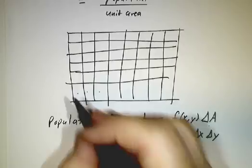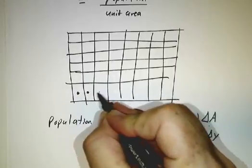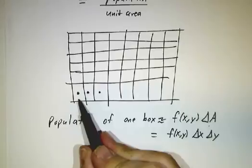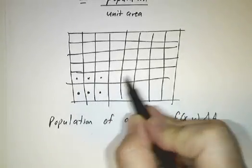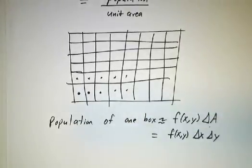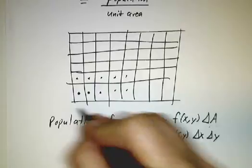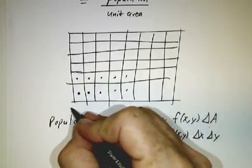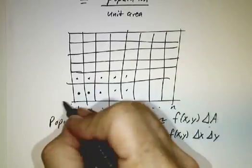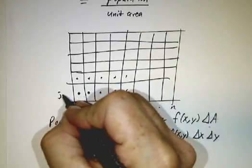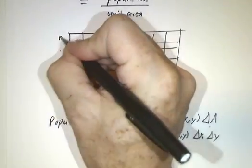We have to figure out the population and density in each box, which means in each box we have to pick a representative point. Before, we had xi-star to represent each little interval. Now we're going to have a representative point for each box. We use two indices to label the boxes: a horizontal index i going from 1 up to n, and a vertical index j going from 1 up to m.